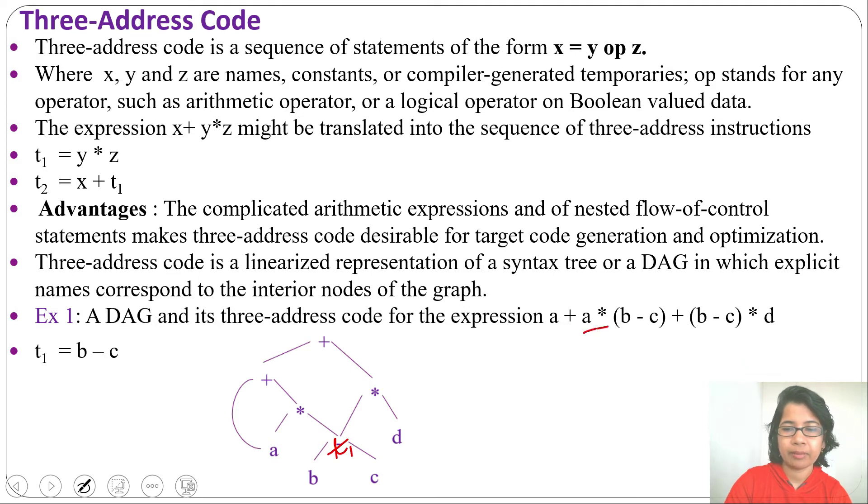Then we will do this multiplication: A * T1 will be T2, so this multiplication stands for T2. Then we will do this multiplication: T1 * D = T3. Next we should add A with T2: A + T2 = T4. This plus stands for T4. Next we should add T4 and T3: T4 + T3 = T5.